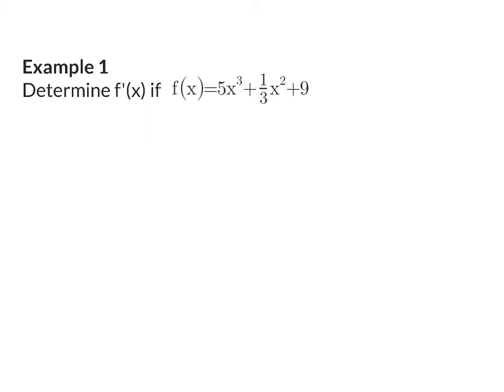Example 1: Determine f prime of x. Here, we are given a function that consists of three terms, so we are going to differentiate each term on its own. We are going to start off taking the exponent of 3 and multiplying in front, so that becomes 15, and in the exponent, when I subtract 1, I have 2. For the second term, I am going to take the 2 and multiply in front, so that is one-third times 2, which is 2 thirds, and my exponent will become x to the power of 1. My third term is a constant, and the derivative of a constant is 0.